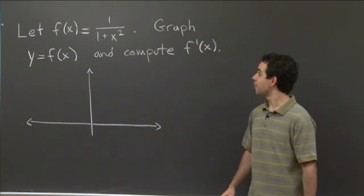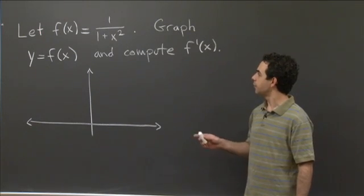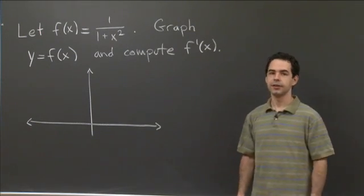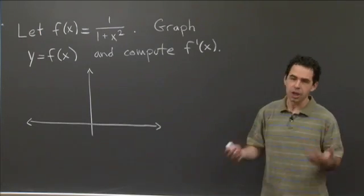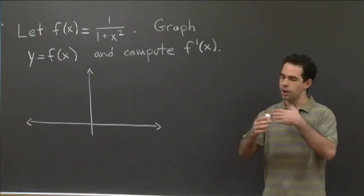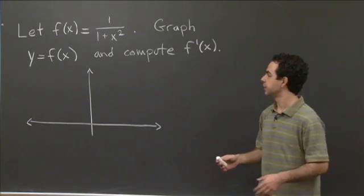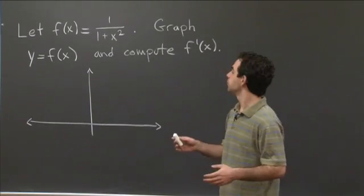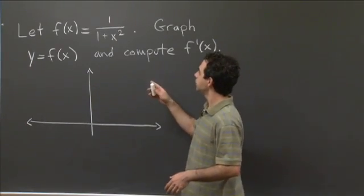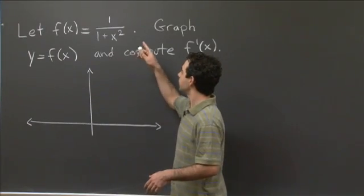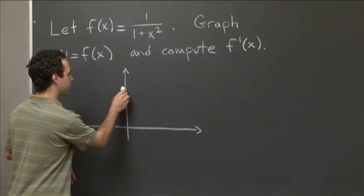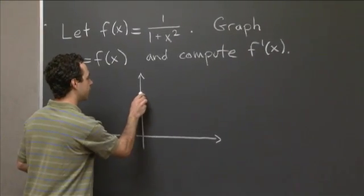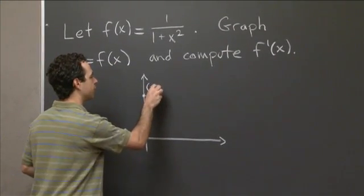All right, welcome back. So to start off, let's try graphing this function f(x). One thing you can always do when you start out graphing a function is to just plot a few points, and that'll give you a very rough sense of where the function is, at least around those points. For example, when x is equal to 0, we have f(0) is 1 over 1, so that's just 1. So we've got this point here, (0, 1).